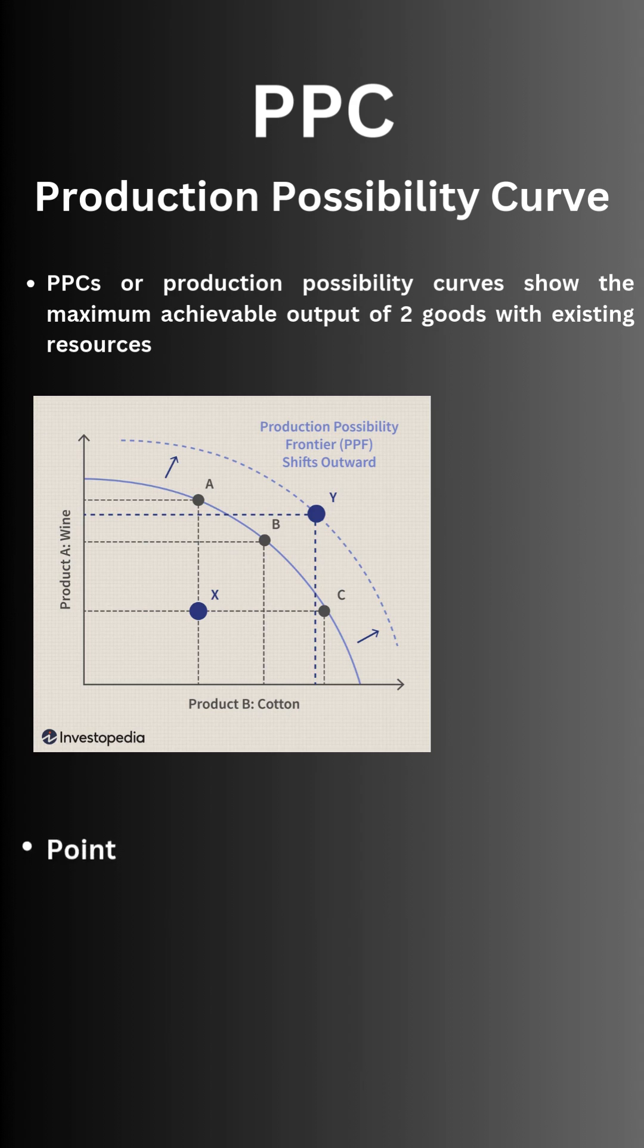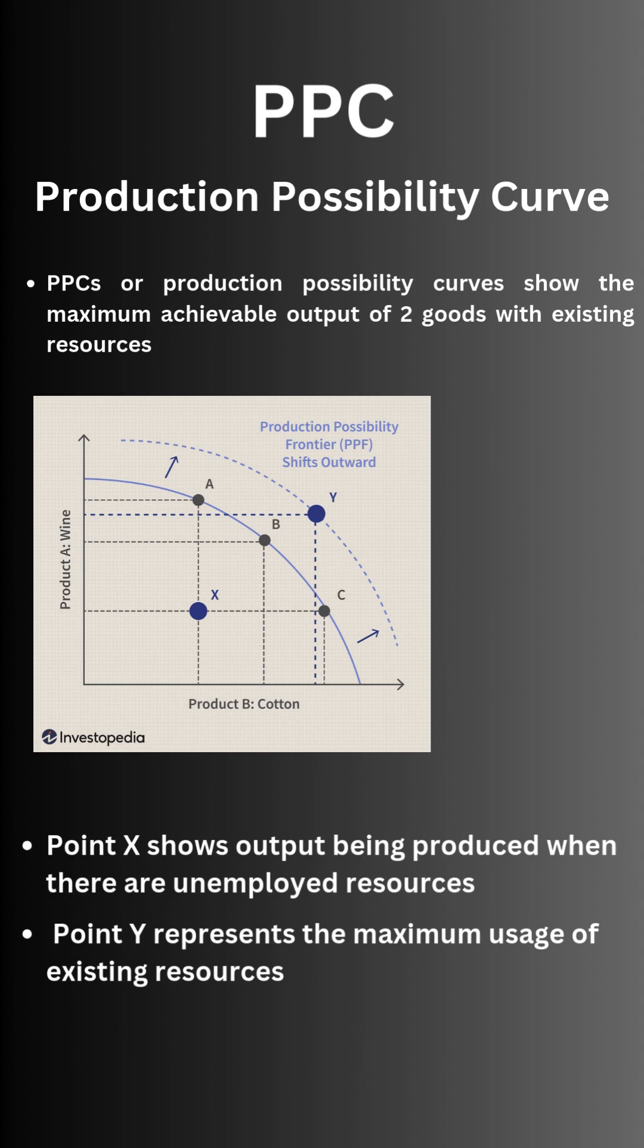Point X shows output being produced when there are unemployed resources. Point Y represents the maximum usage of existing resources, while Z is not attainable.